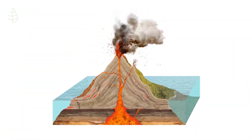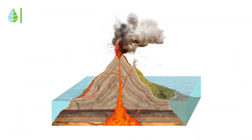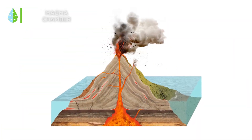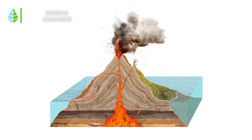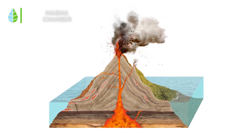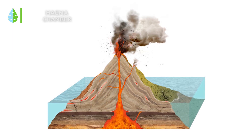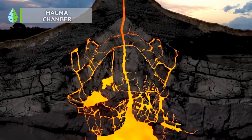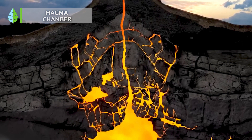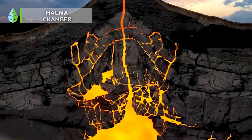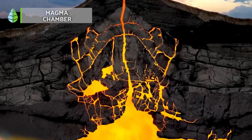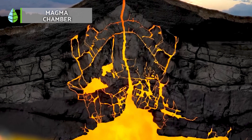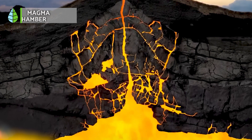Magma Chamber. In general terms volcanoes have six parts, but many more could be detailed. We will start from its lowest part, the magma chamber. This can be defined as a huge deposit at great depths where magma accumulates, which is a mass of molten rock that rises to the surface during an eruption.